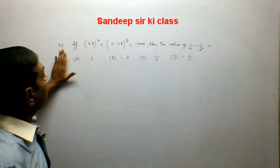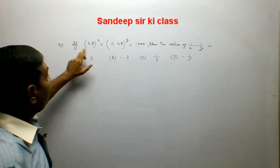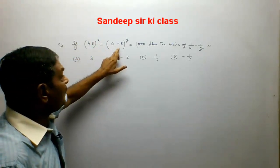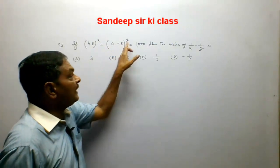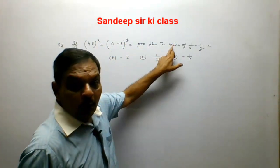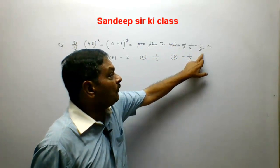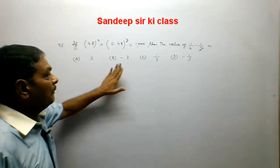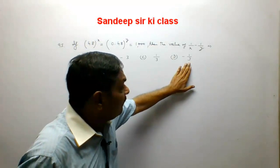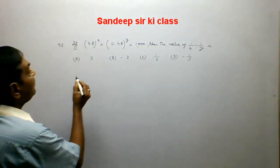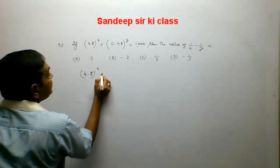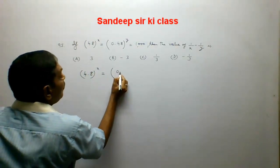Question number 95: if 4.8 raised to the power x is equal to 0.48 raised to the power y is equal to 1000, then the value of 1 upon x minus 1 upon y is — options are 3, minus 3, 1 upon 3, or minus 1 upon 3. We have been given 4.8 raised to the power x is equal to 0.48 raised to the power y is equal to 1000.